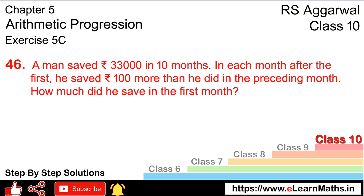Let's do question number 46 of exercise 5C on arithmetic progression. A man saved rupees 33,000 in 10 months. In each month after the first, he saved rupees 100 more than he did in the preceding month. How much did he save in the first month?